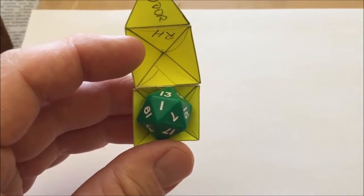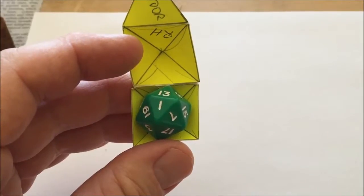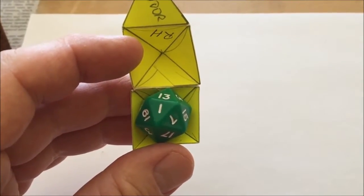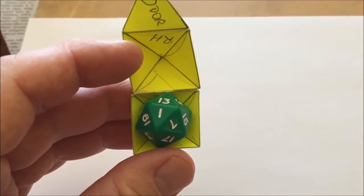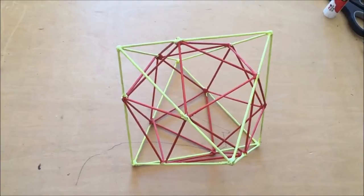The icosahedron fits inside the octahedron with each vertex of the icosahedron cutting each edge of the octahedron in the golden ratio. Here is a stick figure version showing this relationship.